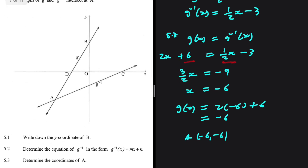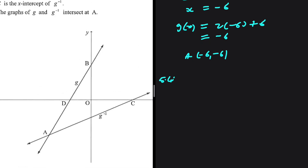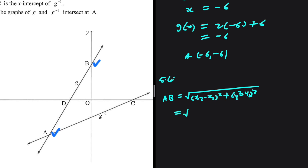That is 5.3 — quite easy to compute. Let's take a look at 5.4. In 5.4 we're looking for the length of AB. We have the coordinates of a and we have the coordinates of b, so finding the length of AB should be pretty much straightforward. We're going to use the distance formula: the square root of (x2 minus x1) squared plus (y2 minus y1) squared. The coordinates of b are 0 and 6, and the coordinates of a are minus 6 and minus 6.